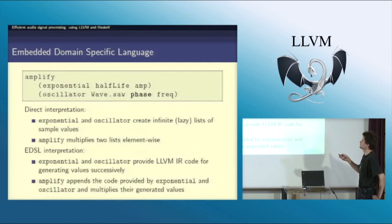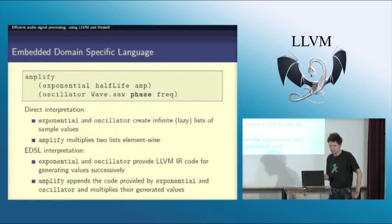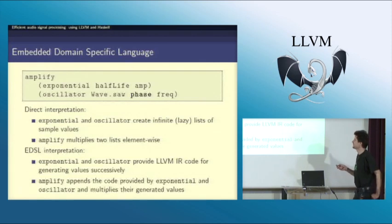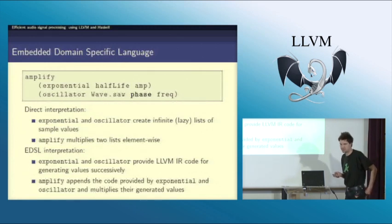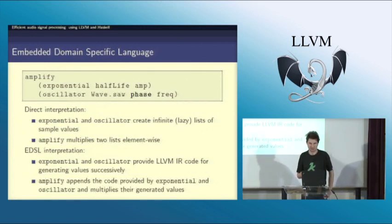Then I combine these two lists using an element-wise multiplication. This works, it's nice, and it's slow. What I want to do is take the same expression and interpret it differently with a so-called embedded domain-specific language.